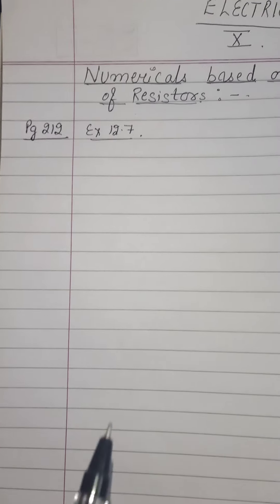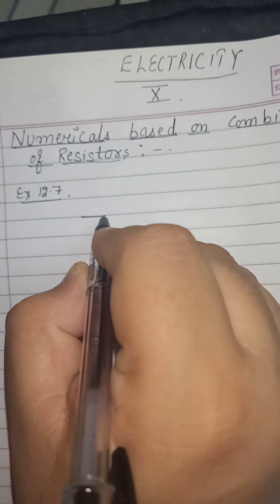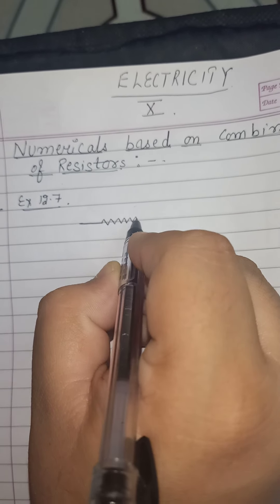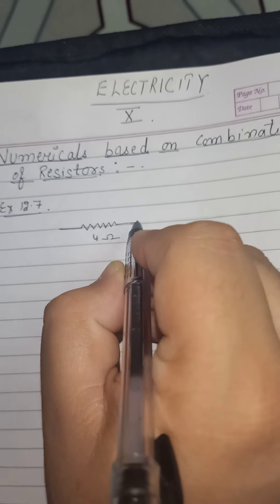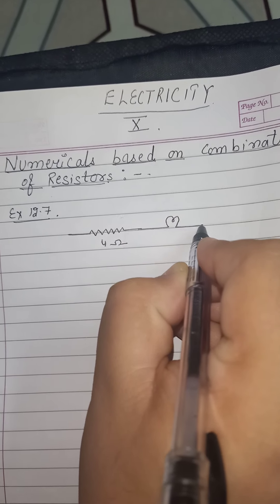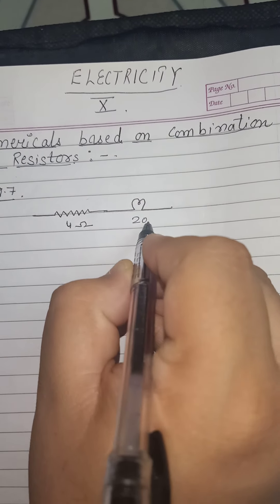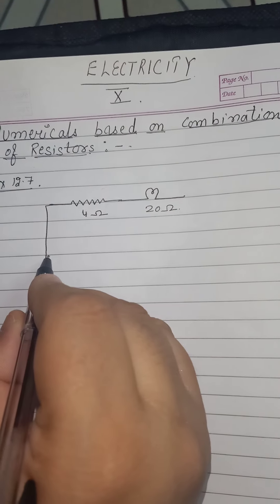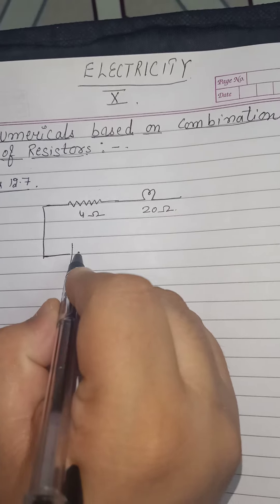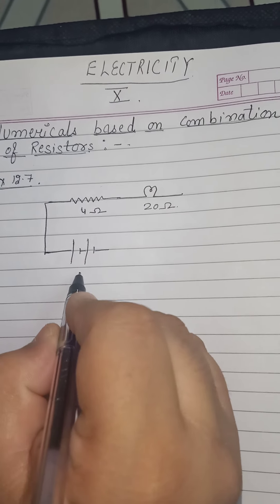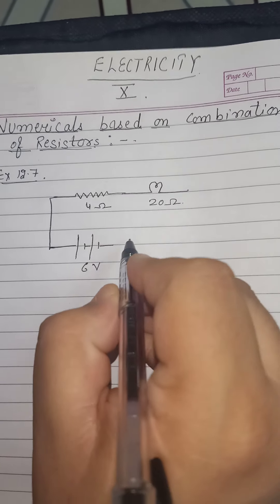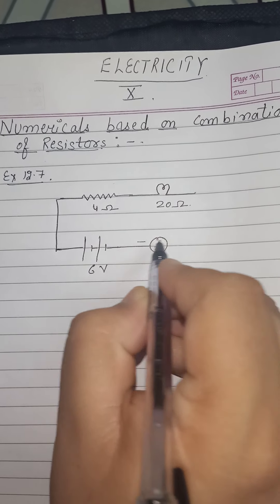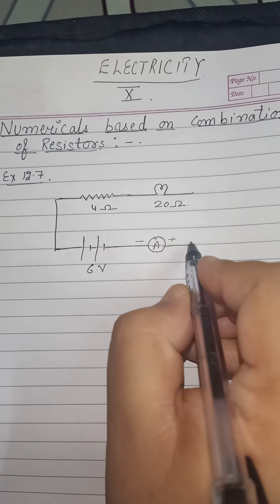Let us now first draw the circuit diagram in which an electric lamp and a conductor are connected. The resistance of the conductor is 4 ohm and the resistance of the lamp is 20 ohm. They are connected in series — joined end to end — and connected with a battery of 6 volt, an ammeter and a key.